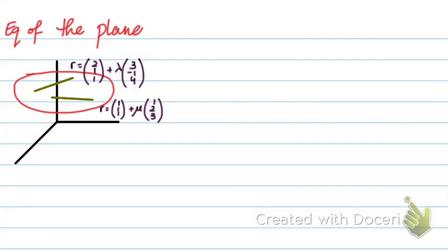All right, so how do you find the equation of the plane when you're given two line equations on the plane? I have this plane in red over here and it has two lines.